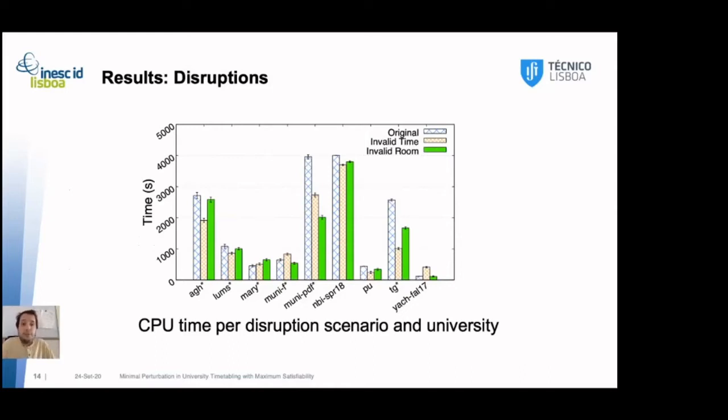So, now, let's consider disruptions. In this work, we only consider invalid time and invalid room disruptions. As the other peak disruption is the modifying of enrollment. However, in this dataset, all student conflicts are solved. So, a change in enrollment will not cause a significant change in the solution. The solution will continue to be feasible. Here in this graph, we have the time per instance. The instances are organized by university. And we can see in most of them, the original solutions takes longer to solve than the disrupted instances.